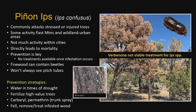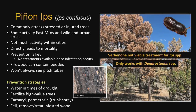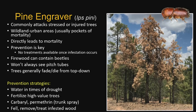Verbenone: some people recommend it for prevention of pinion Ips. Verbenone is an anti-aggregation pheromone for mountain pine beetle and Dendroctonus species — not an Ips species. Currently, research studies are being done to see if verbenone works for Ips, but the data in the literature is just not there yet to say it does. If it is confirmed, it may be a game changer. The concept is little chemical packets you staple to the tree — anti-aggregation pheromones signal 'no vacancy,' so beetles go find somewhere else. Right now I don't recommend using verbenone, but if clients are willing to spend the money, make sure you read the literature and apply the proper amount correctly.